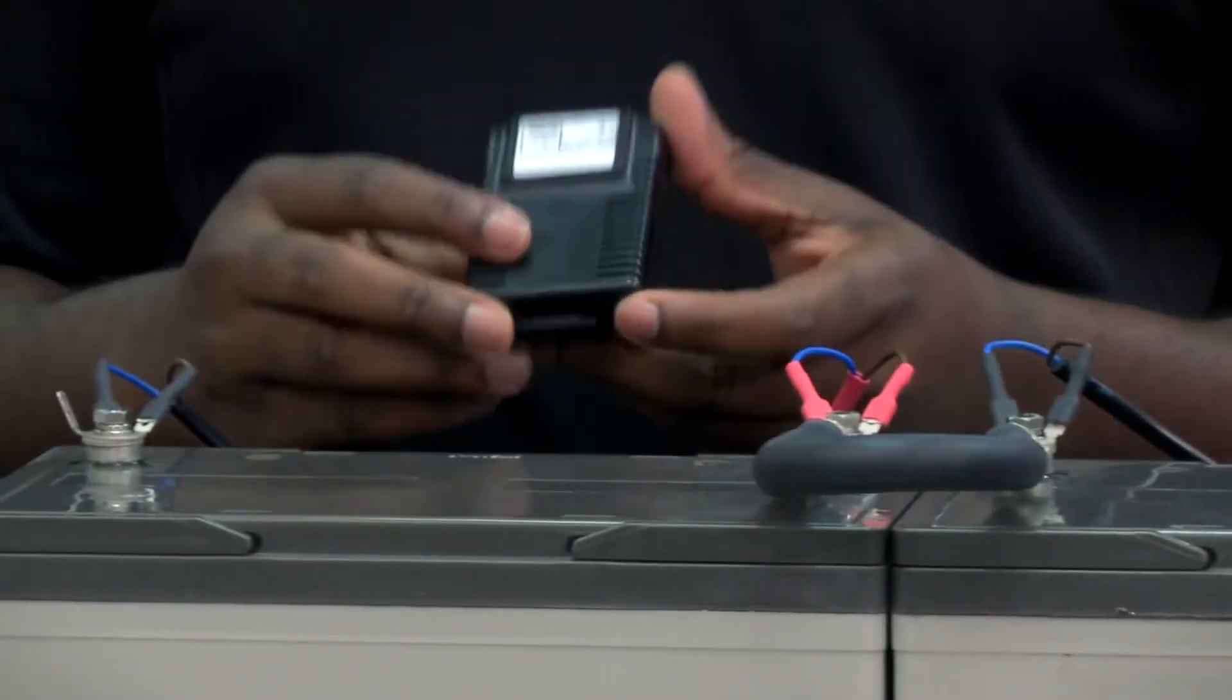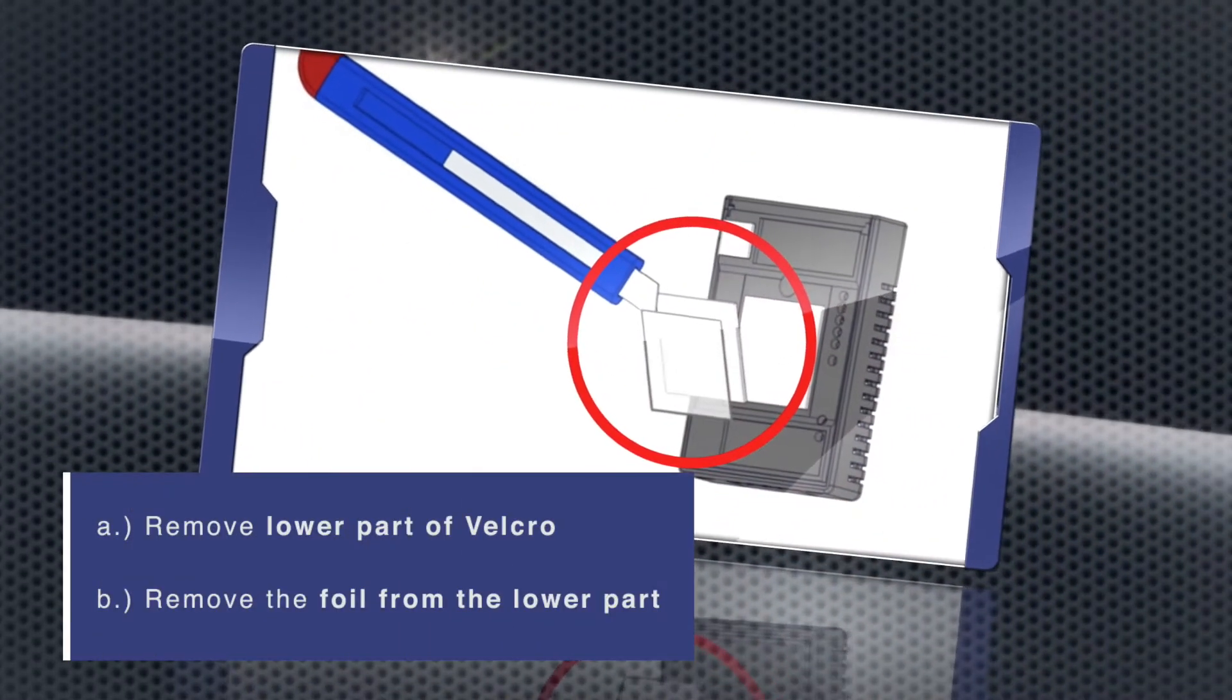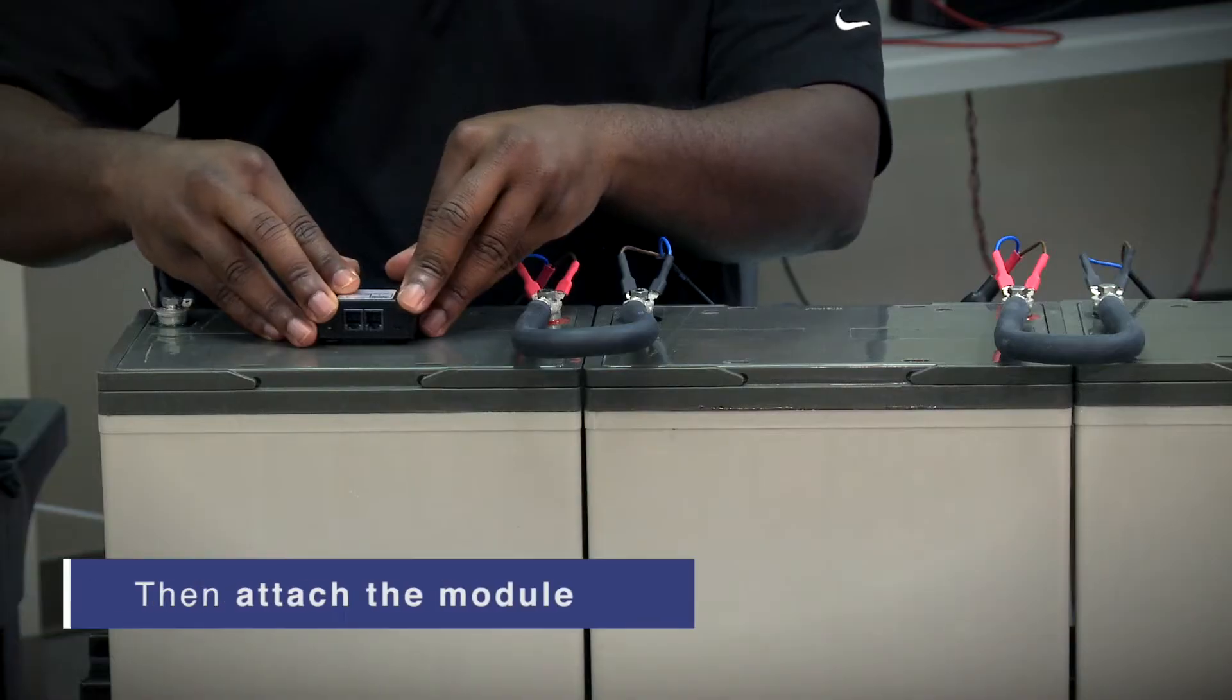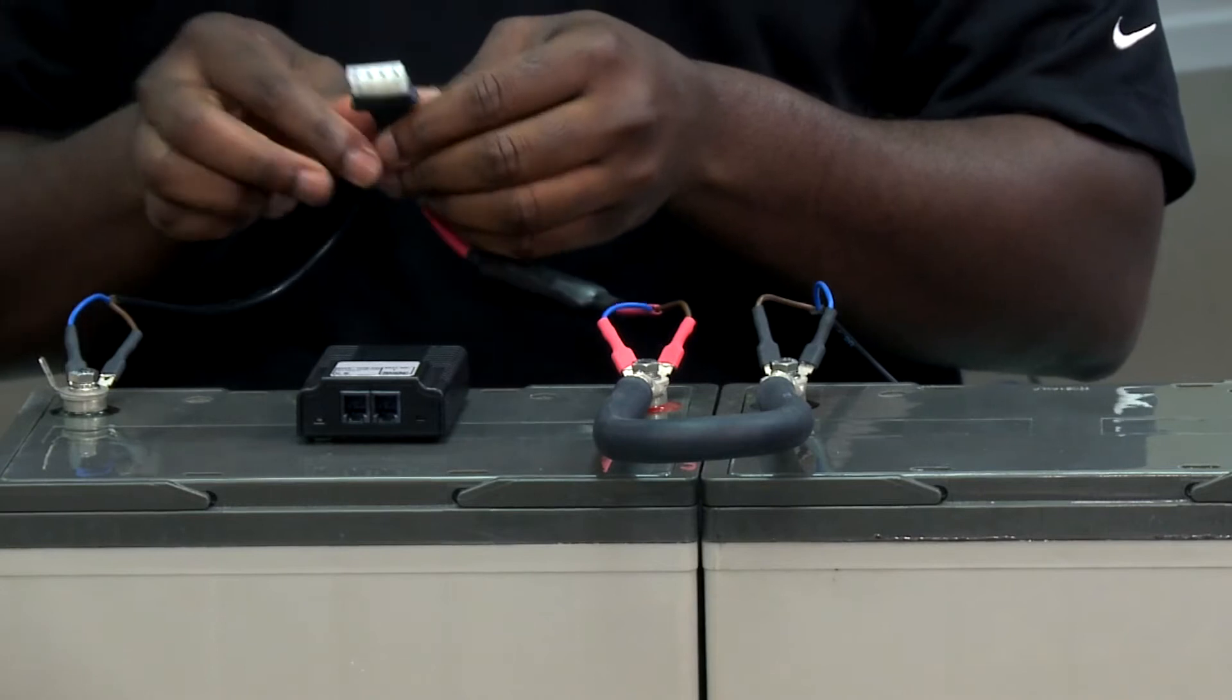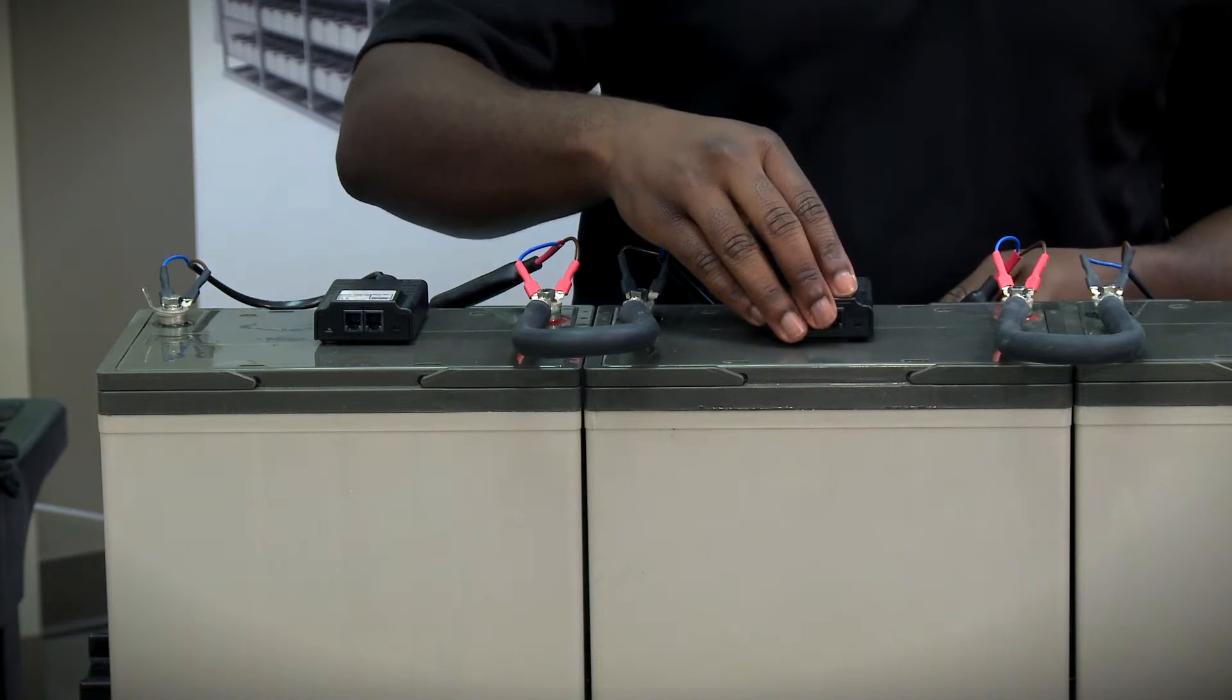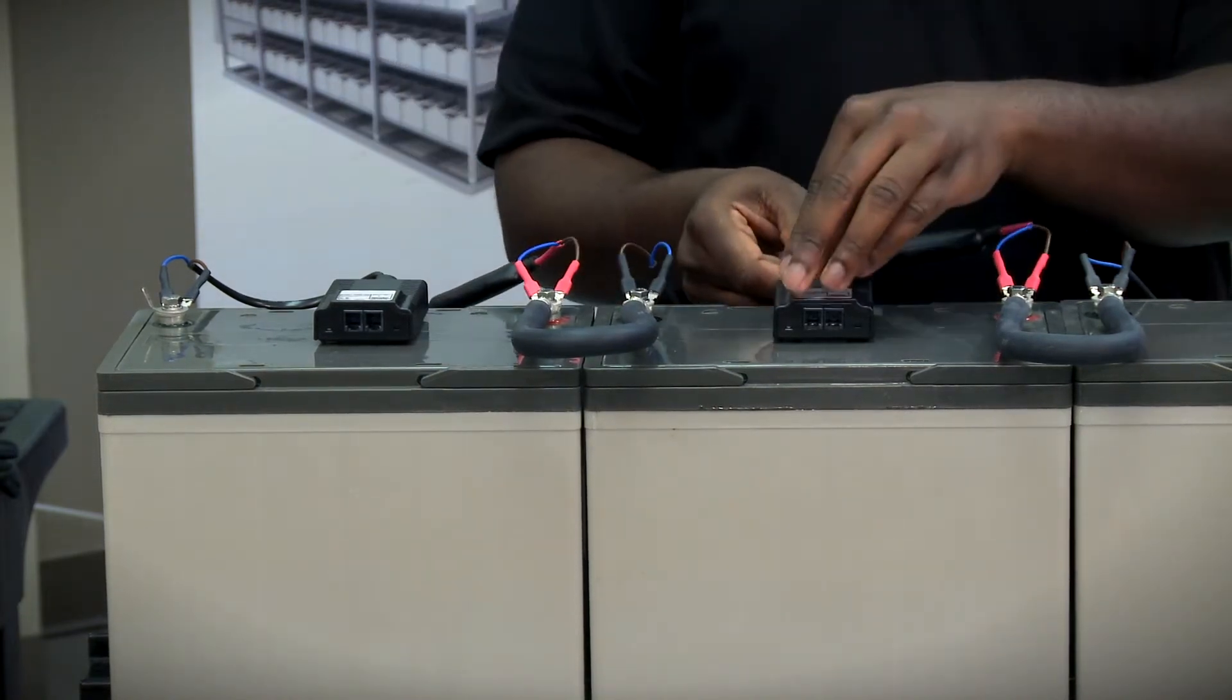In this step, the technician is going to install the C20 module onto the battery using the 3M dual lock strips. From here, he's attaching the measuring cable to the module. He repeats the process for the next module, attaching it to the battery and then applying the measuring cable.